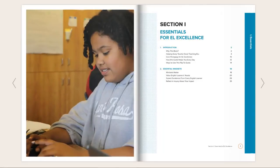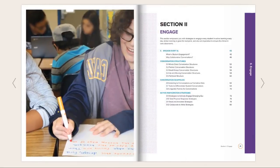Section 1 introduces readers to essential pedagogy and mindsets for EL excellence every day. In Chapter 1, learn six essential actions that make or break EL achievement. Chapter 2 invites readers into humble inquiry to shift mindsets via actions that make our classrooms empowering learning environments with ELs and all students from diverse cultural, ethnic, racial, and socioeconomic backgrounds.